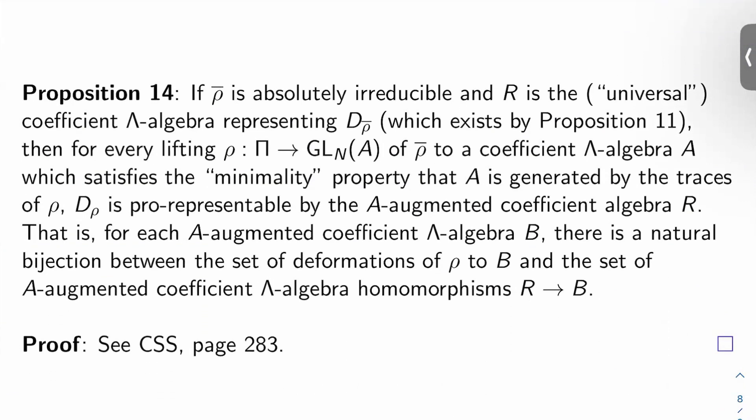So proposition 14: if rho bar is absolutely irreducible, and R is the universal coefficient lambda algebra representing D sub rho bar, which exists by proposition 11, then for every lifting rho from pi to GLN of A of rho bar to any coefficient lambda algebra A which satisfies the so-called minimality property that A is generated by the traces of rho, that should sound familiar. If you go back to chapter one of my notes, we had functors whose images were generated by the traces of Frobenius at various primes. So we're kind of generalizing that here.